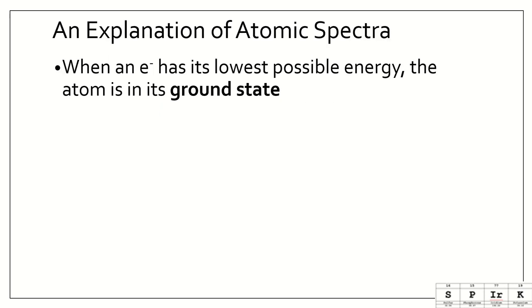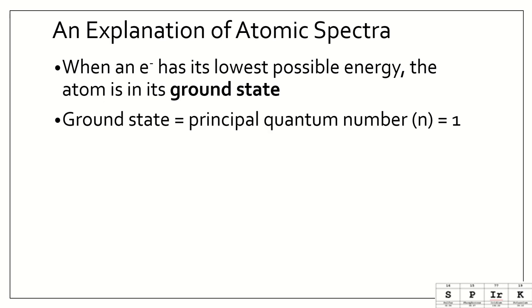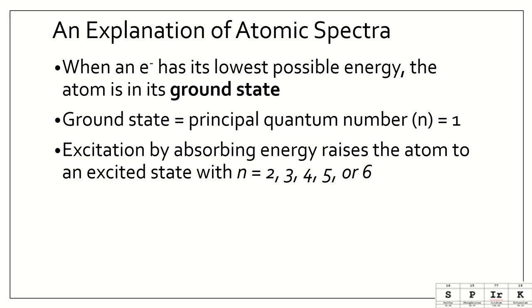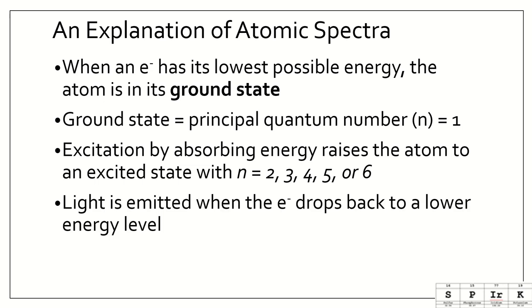When an electron has its lowest possible energy, the atom is in its ground state. Think about that latter depiction we saw in section 1. We have the ground state is the lowest energy, or, for example, the latter, it's close to the ground. The ground state is typically principal quantum number n equals 1, or the first energy level. And excitation, by absorbing energy, raises the atom to an excited state, with electrons where n equals 2, 3, 4, 5, or 6. Light is then emitted when the electron drops back to a lower energy level.